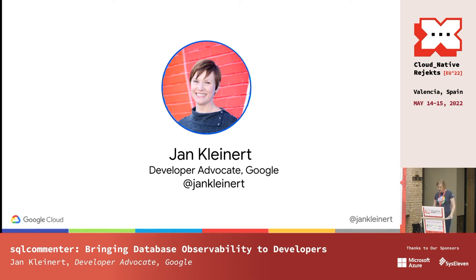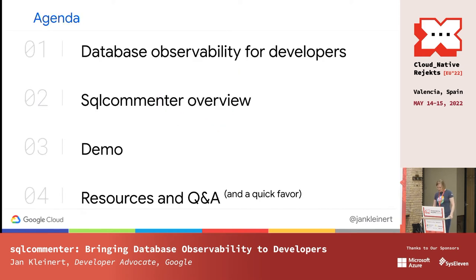I'm around after the talk or on Twitter if you want to talk about it later. We're going to start by talking about database observability in general — what it is, kind of what the landscape looks like, what the problem is that would require us to need this in the first place. Then I'll talk about SQL Commenter, we'll do a live demo hopefully, and then there should be plenty of time at the end to share some resources and have Q&A. For those of you here in this room, I am going to ask for a quick favor at the very end.